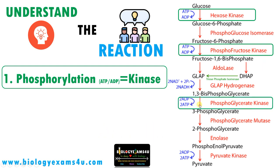The third step: 1,3-bisphosphoglycerate becomes 3-phosphoglycerate. Here ADP is phosphorylated to form ATP — a phosphate is removed from the substrate and added to ADP forming ATP. It's a phosphorylation reaction. Here also the enzyme is kinase — just prefix the substrate name: phosphoglycerokinase.